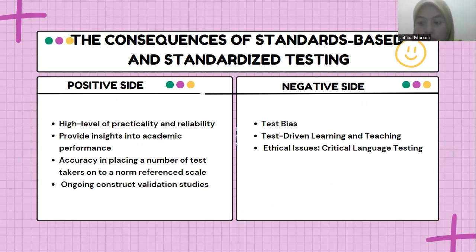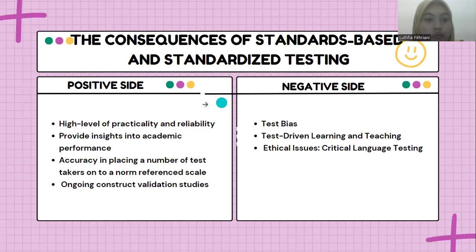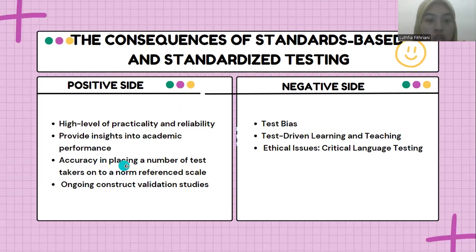The consequences of standard-based and standardized testing have a positive side and a negative side. On the positive side, we have a high level of practicality and reliability, provide insight into academic performance, accuracy in placing a number of test takers onto a norm reference scale, and ongoing construct validation studies.